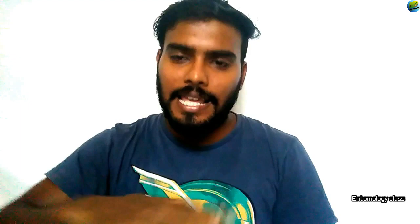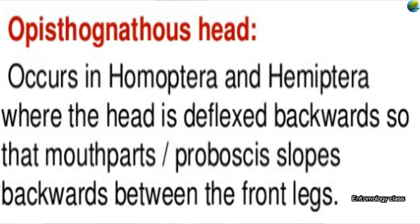The next kind is the opisthognathous head, where the mouthpart is deflexed relative to the body axis. This occurs mostly in Homoptera and Hemiptera — the bug type — where the head is deflexed backwards so the mouthparts or proboscis slope backwards between the front legs. The beak is kept between the front legs, and when it is necessary to feed, the beak is taken out and used to suck sap.